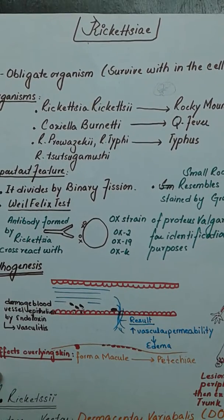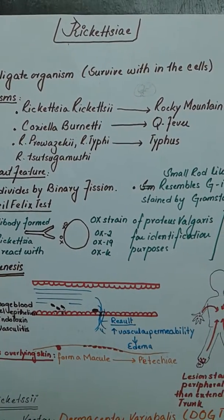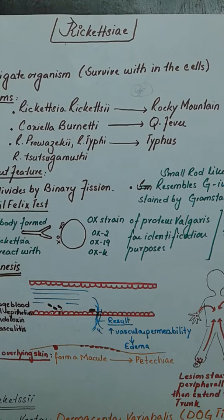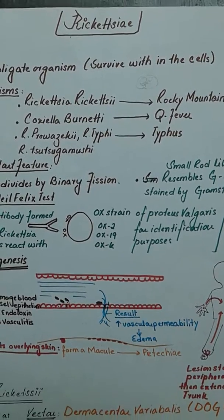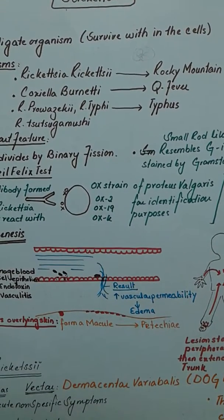Rickettsia consists of various types: Rickettsia rickettsii, which causes Rocky Mountain spotted fever; Coxiella burnetii, which causes Q fever; R. prowazekii and R. typhi, which cause typhus; along with Rickettsia tsutsugamushi, which also causes typhus.